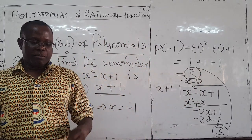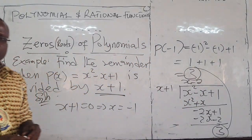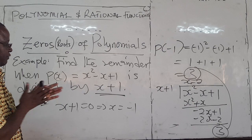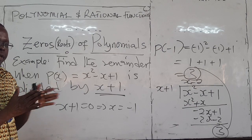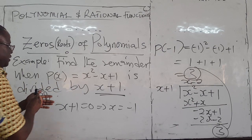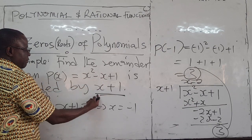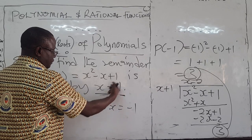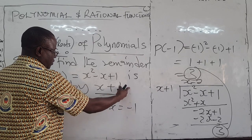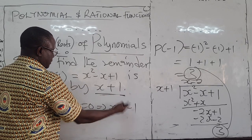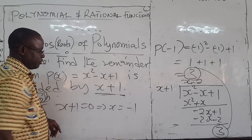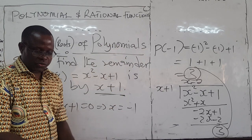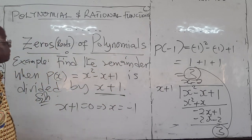So the remainder theorem works. It says that if you want to find the remainder when dividing a polynomial by some linear factor, set the linear factor equal to zero, find x, plug it into the polynomial, compute it — the result is the remainder.